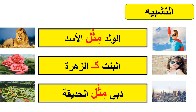When you say الولد مثل الاسد — 'the boy is like the lion.' And البنت كالزهرة — 'the girl is like the flower.'